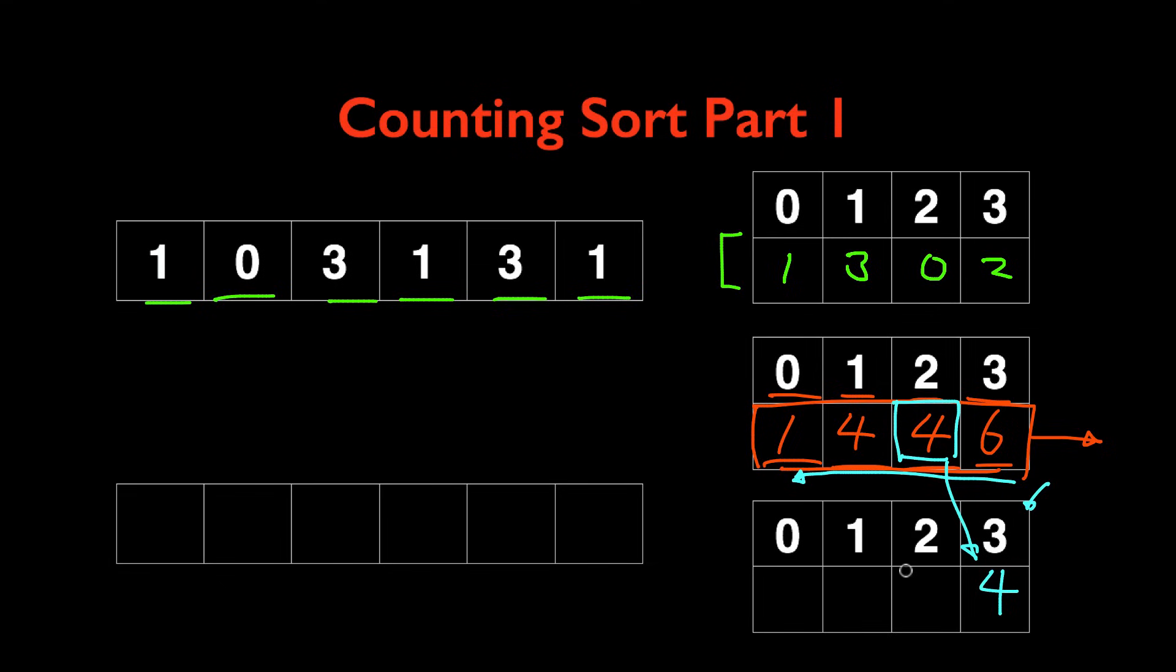And we're going to do the same thing for index 2. The value here should be what's in index 1 currently, so it should also be 4. And at index 1 we're going to put 1, at index 0 we're going to put 0.